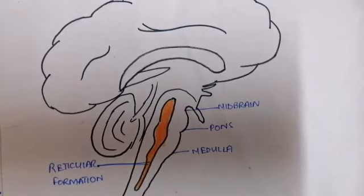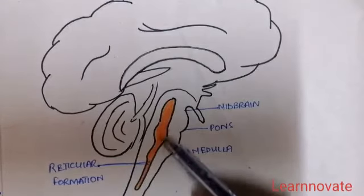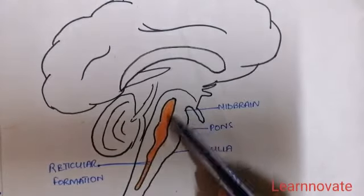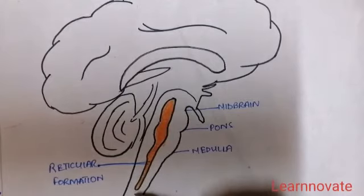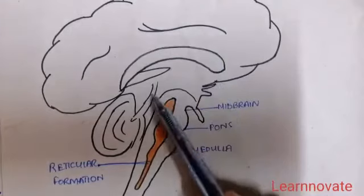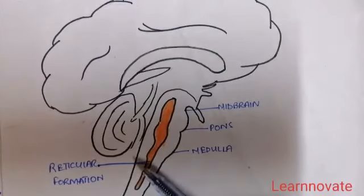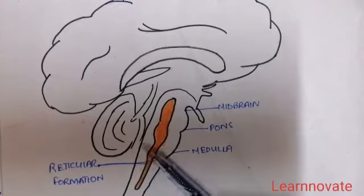Welcome to my channel Lenovoid. In this video we will discuss the reticular formation, which extends from the spinal cord up to the cerebellum and is a major connection of the central nervous system. We will also discuss the connections of the reticular formation with different areas of the central nervous system including the cerebrum, the cerebellum, and the spinal cord, as well as the major functions and neuroanatomy of the reticular formation.